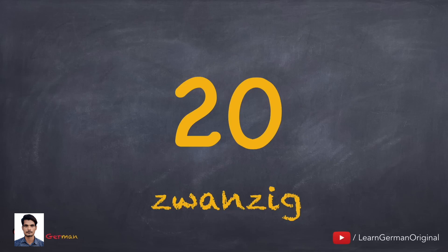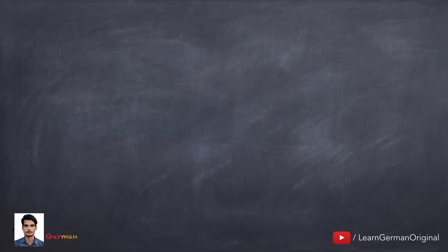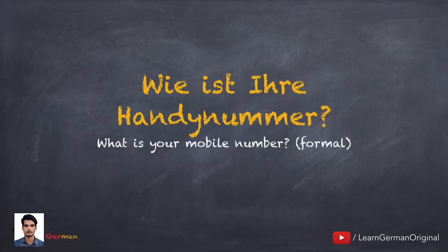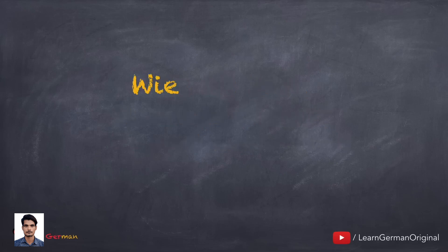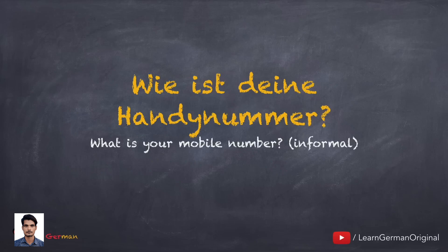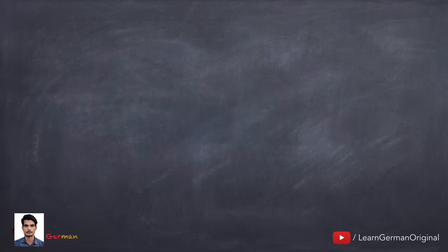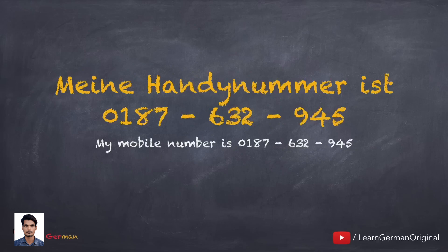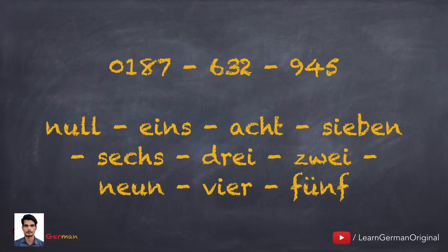Now you know numbers from 0 to 20. Let's see how you can use these numbers to say your mobile number. Wie ist Ihre Handynummer? — This question is asked formally. Informally: Wie ist deine Handynummer? The answer to both is the same: Meine Handynummer ist 0187 632 945. Now try to read your mobile number in German.